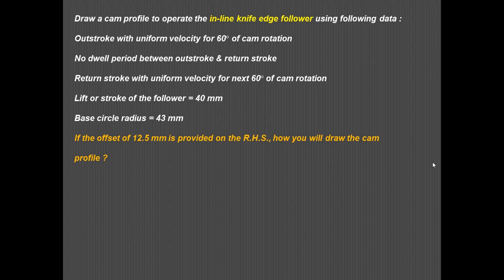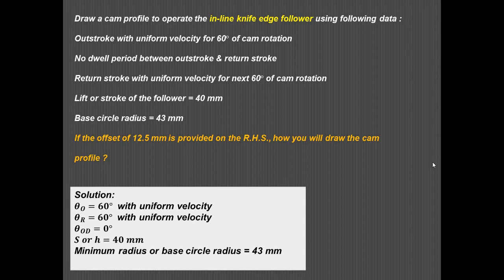There are two cases: first we'll draw the cam profile for the inline knife edge follower, then for the offset follower. To summarize the data: out stroke is 60 degrees, no dwell between out stroke and return stroke, return stroke is 60 degrees, out stroke dwell is zero. Lift or stroke of the follower is 40 mm or 4 cm, minimum base circle radius is 43 mm, and an offset of 12.5 mm is provided on the right-hand side.